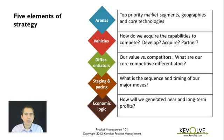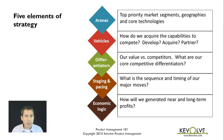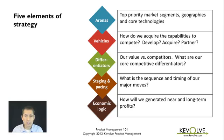Arenas are your top priority market segments, your geographies, and your core technologies. For example, if you're developing the next-generation DNA sequencers as a product manager, you need to decide what market segments you're going after — the academic research market or the medical market. What geographies — developed countries like Japan, Western Europe, and the U.S., or emerging markets like Brazil, India, or China? And out of the broad set of DNA sequencing technologies, which are the core technologies your company and product group will focus on? That's arenas.